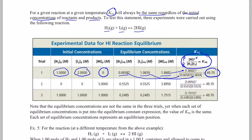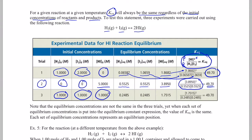That calculated value should not change regardless of the initial concentrations of reactants and products. In the second experiment, I start with no H2 or I2, but 5 mol/L of HI. When that reaction reaches equilibrium, I measure H2, I2, and HI and place those values in my expression — I get 49.70 again. In the third experiment, I have 1 mol/L of each reactant and product. At equilibrium I measure their concentrations, place them in the expression, and I get 49.70.